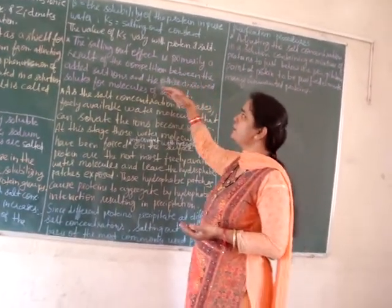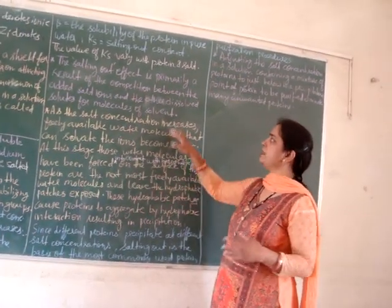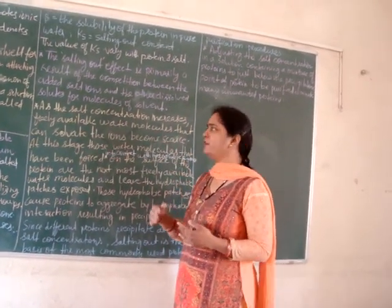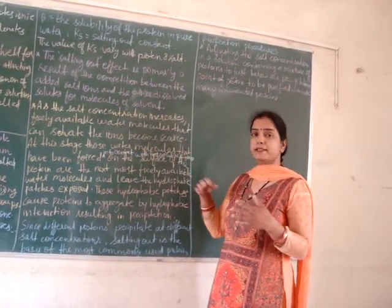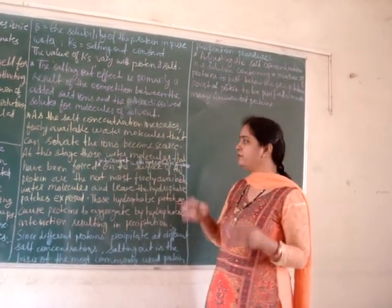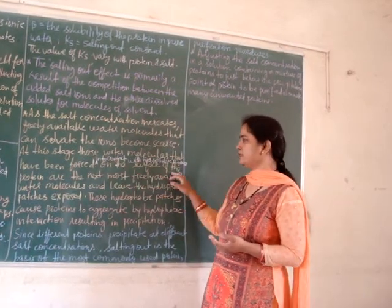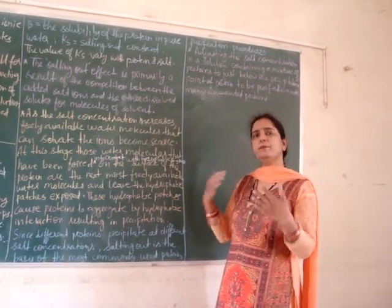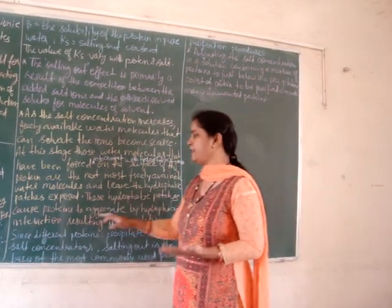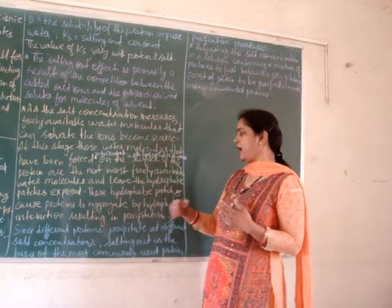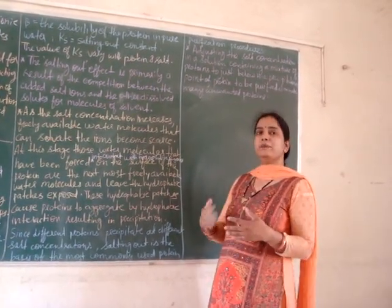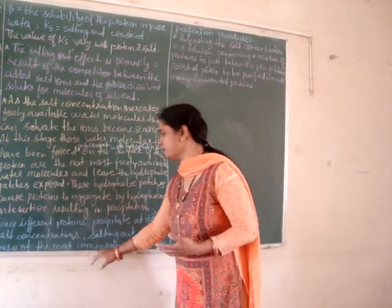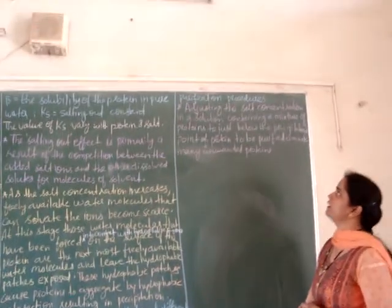The salting out effect is primarily a result of the competition between the added salt ions and other dissolved solutes for molecules of solvent. As the salt concentration increases, freely available water molecules that can solvate the ions become scarce, and at this stage, water molecules in contact with the hydrophobic R groups on the surface of the protein are the next most freely available. These water molecules leave the hydrophobic patches exposed on the protein surface, and these hydrophobic patches cause proteins to interact and aggregate by hydrophobic interaction, resulting in precipitation. Since different proteins precipitate at different salt concentrations, salting out is the basis of the most commonly used protein purification procedure.